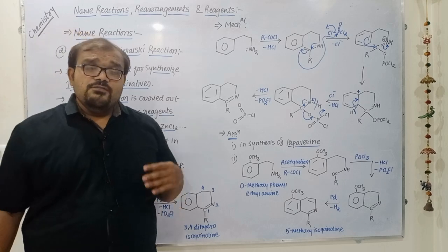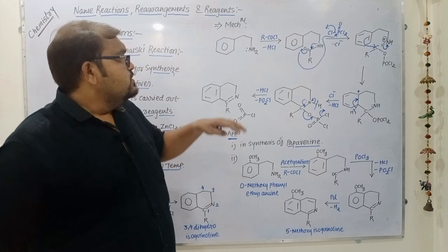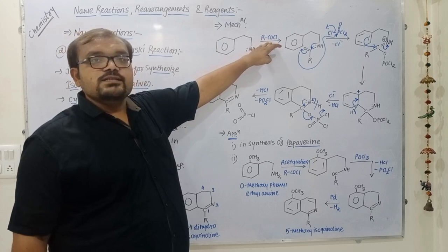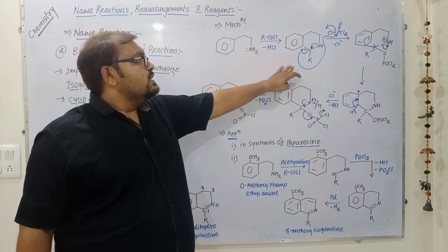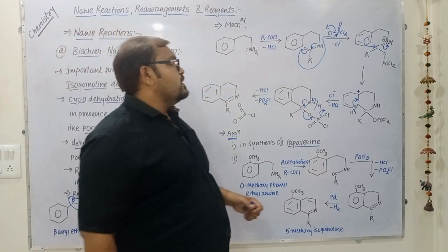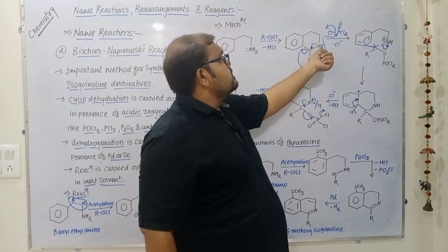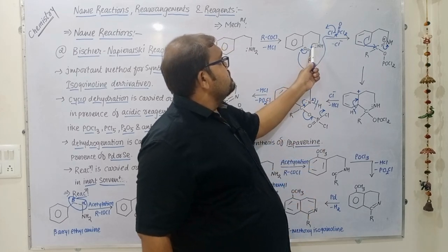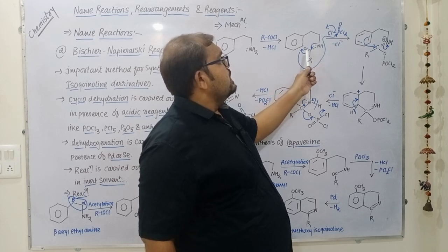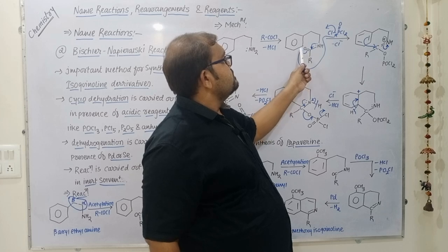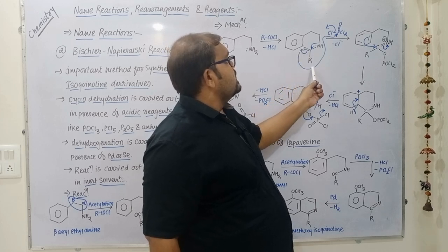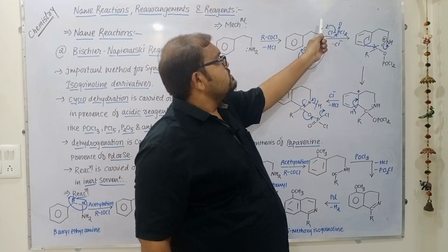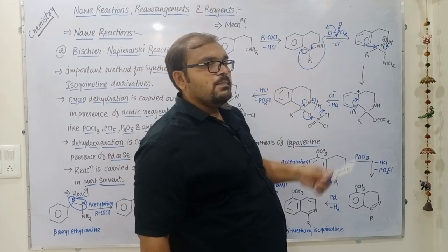In the mechanism, beta-aryl ethylamine reacts with acetyl chloride; after loss of HCl it gives an intermediate product. The lone pair of nitrogen shifts between carbonyl carbon and nitrogen to give a double bond. The pi bonding electrons of the carbonyl group shift over oxygen, and oxygen attacks the phosphorus of POCl₃.